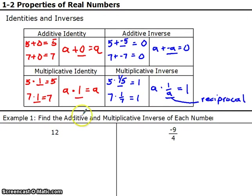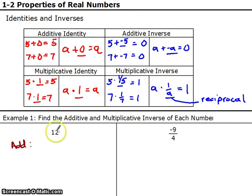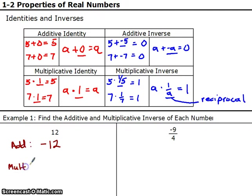Let's find the additive and multiplicative inverse of each number. For 12, the additive inverse: we need to cancel out 12 and make it equal 0, so negative 12 is the additive inverse. For the multiplicative inverse, we find the reciprocal — 12 flipped over is 1/12.